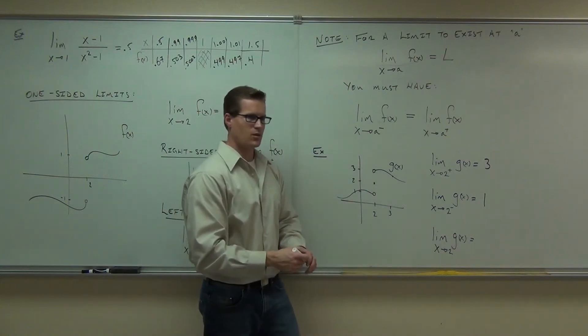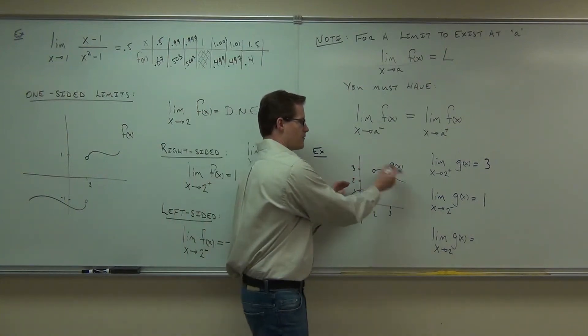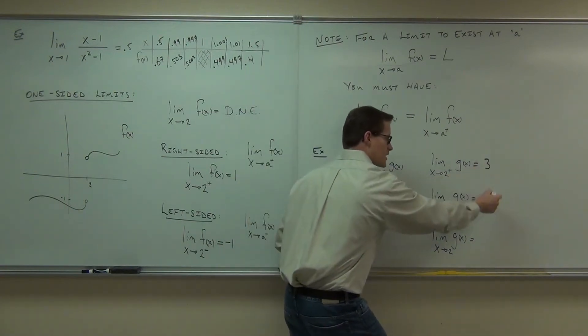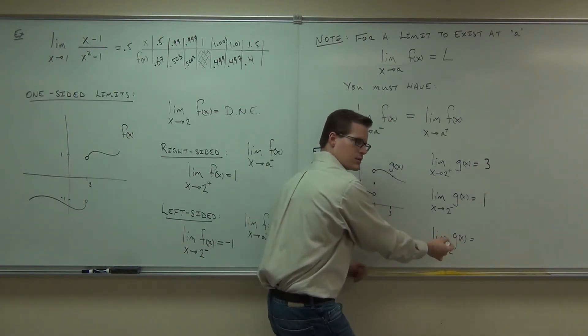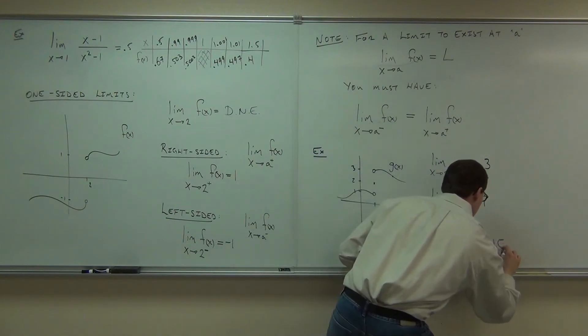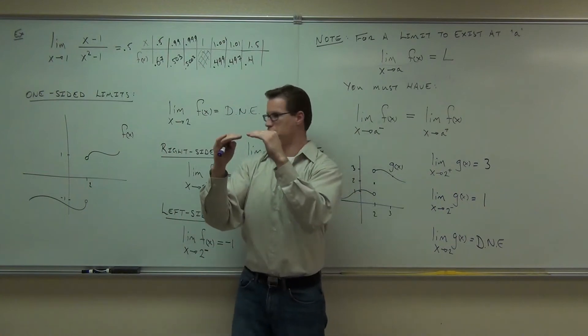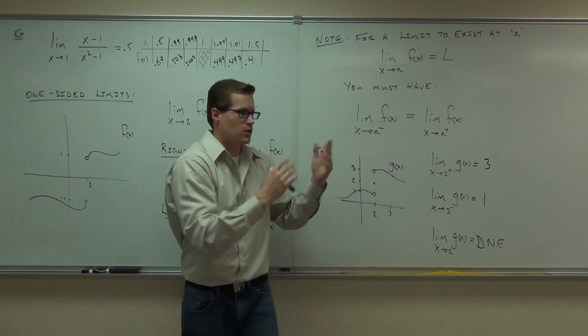Might as well not even be there. It doesn't matter. We don't care about that point. We care about the function value, the y value, as we approach the x value. So if this does not equal that, does that exist? You can really see it though, can't you? If the lines don't match up, it's not there. It's not going to happen. The limit doesn't exist.